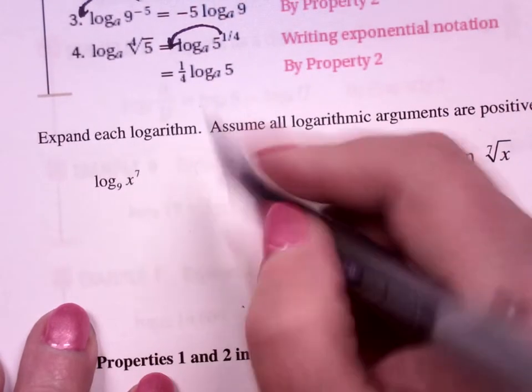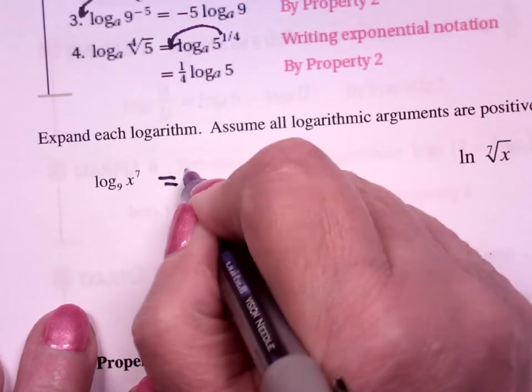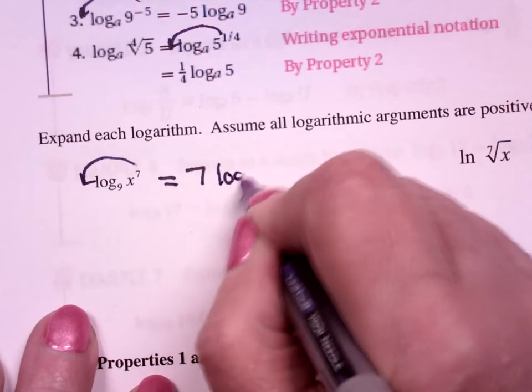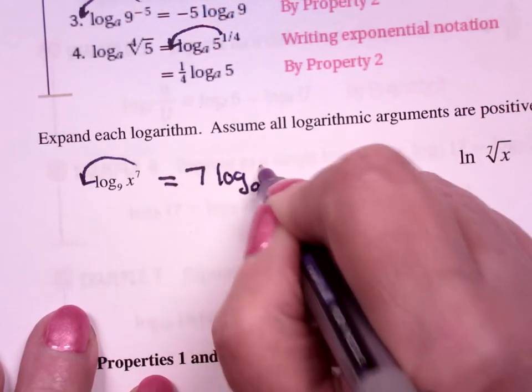So if I have log base 9 of x to the 7th, bring the exponent down in front, it's 7 log base 9 of x.